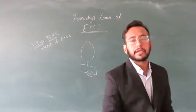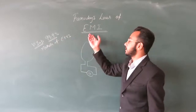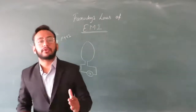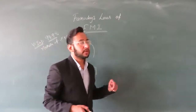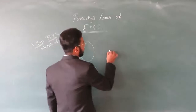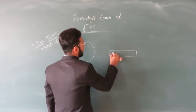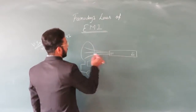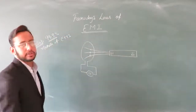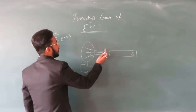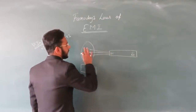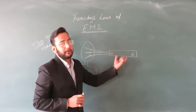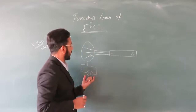In the last class we saw what a coil is and how induced current is produced. We noticed that when we move a magnet and apply force, we get a magnetic field. Now, this coil has magnetic power. The magnetic field lines will touch this coil. If you move the magnet forward and backward, the number of lines will increase.